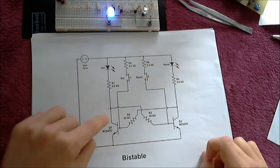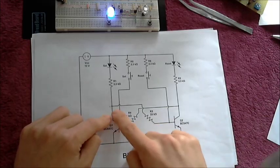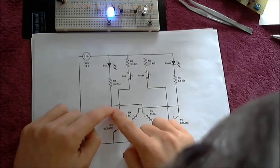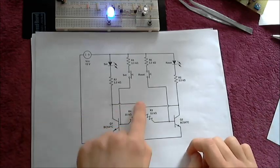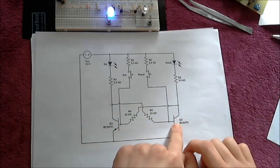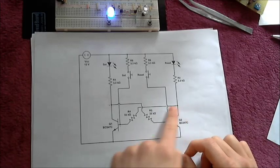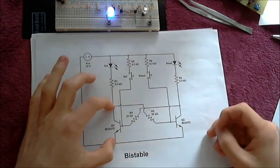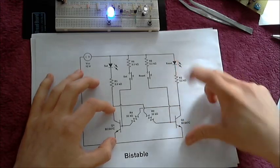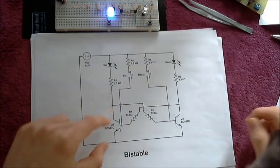The important thing here: transistor on, collector low. You can see that the collector of Q1 is connected through a resistor to the base of Q2, and the collector of Q2 is connected through a resistor to the base of Q1.